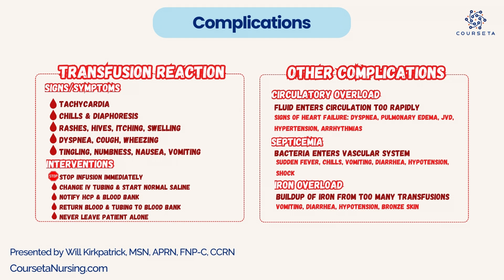Other common complications include circulatory overload — patients with heart failure are really at risk. This occurs when fluids enter circulation too rapidly, which is why we start at a lower rate and increase after the 15-minute mark. Septicemia occurs when bacteria enters the vascular system; common signs include sudden fever, chills, vomiting, diarrhea, and hypotension or shock. Iron overload can occur with many transfusions, since red blood cells have high iron content; signs include vomiting, diarrhea, hypotension, and bronze skin.